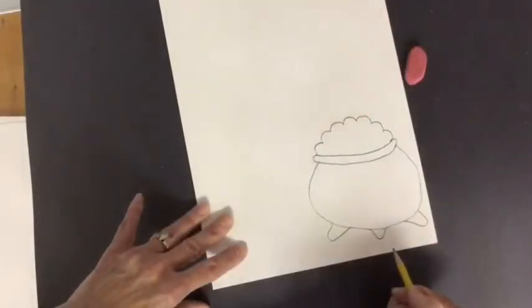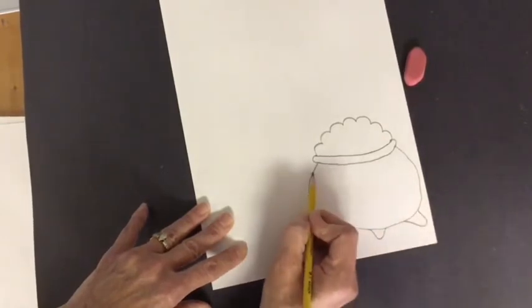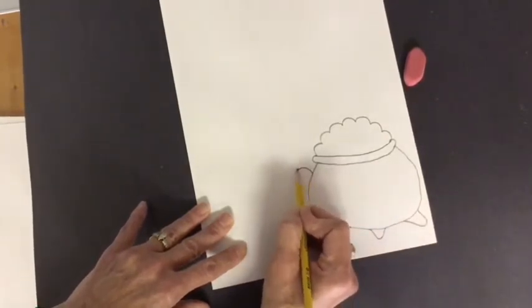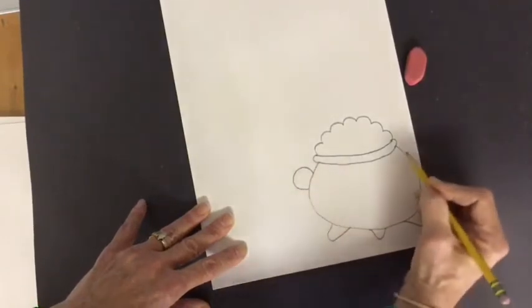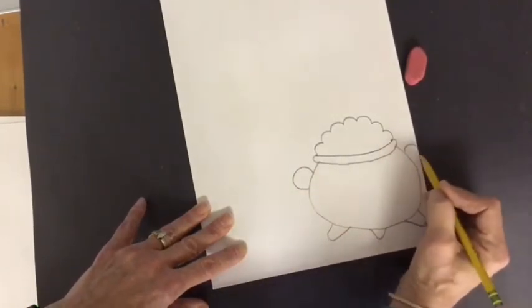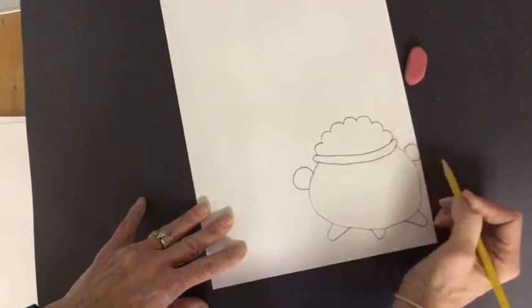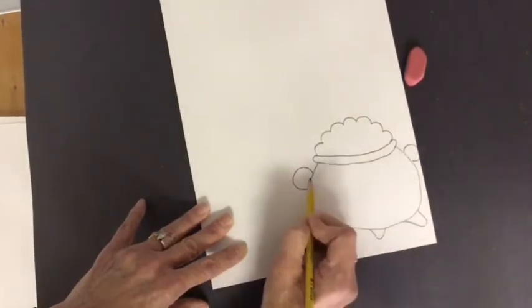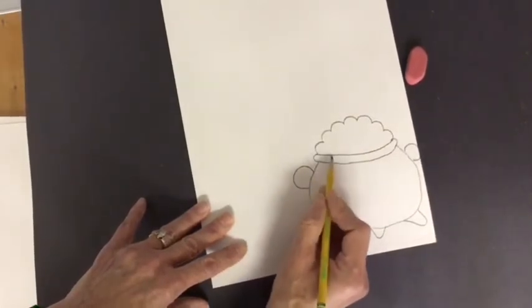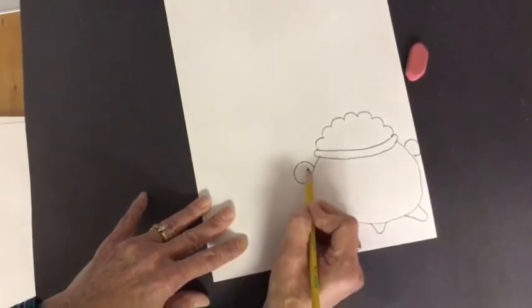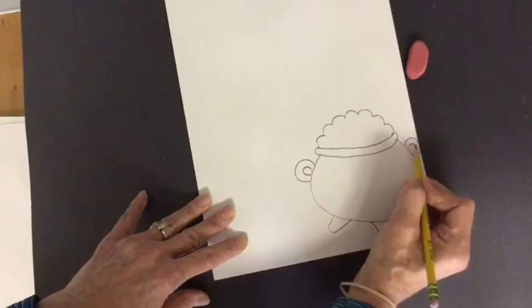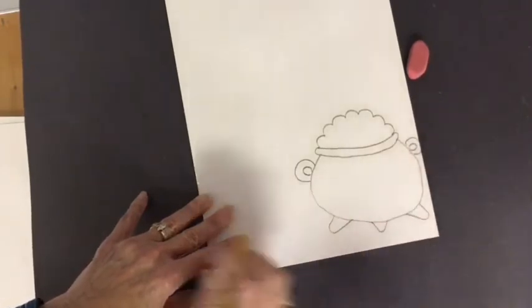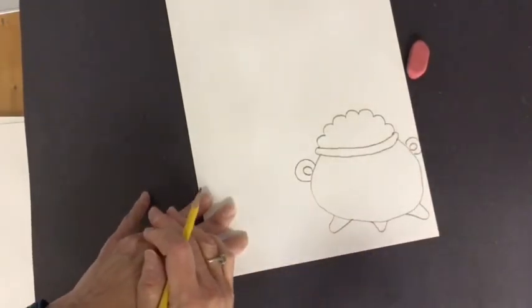Now they also have handles on them so you can pick them up, I'm going to use a curved line again. Another big C coming out of that side and a big C coming out of that side. Then I'm going to repeat it inside just like I did here to leave a space. Another one. And another one. There's my big fat pot of gold.